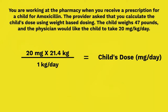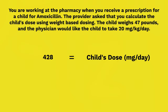We then solve using the converted kilogram value: 20 milligrams times 21.4 kilograms divided by 1 kilogram per day. This is because the physician wants the patient to take 20 milligrams for every 1 kilogram the patient has. Kilograms appear in both numerator and denominator and cancel out, leaving milligrams per day. Multiplying the numerator gives 428 divided by 1, or 428 milligrams per day.